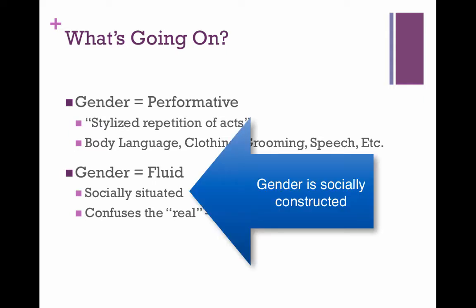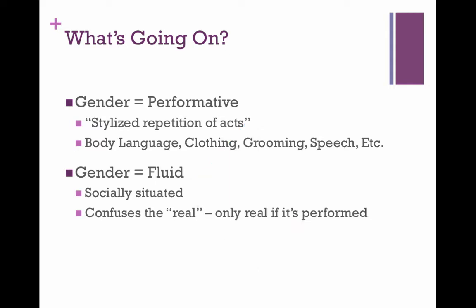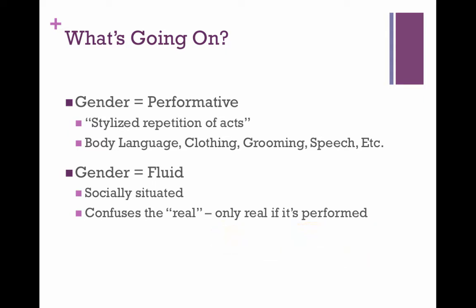Because gender is an act, the ways in which we act gender blurs the lines of what is real. It's only real insofar as it's performed. Since gender is fluid and isn't an inherent normative identity marker, gender can change both within individuals or within larger societal settings. For instance, what it means to be a white middle-to-upper-class woman today looks very different from what it was to be a white middle-to-upper-class woman in the seventeenth century.